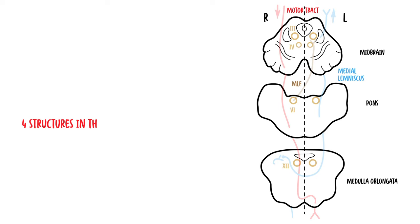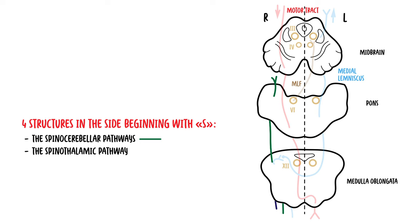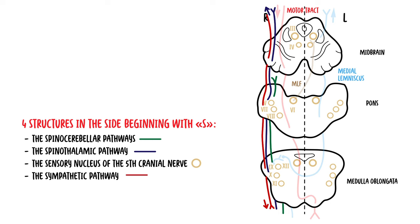The second rule is that there are four structures in the sides, or the lateral aspects of the brainstem, beginning with S. These are the spinocerebellar pathways, the spinothalamic pathway, which is your pain, the sensory nuclei of cranial nerve five, and lastly, the sympathetic pathway.